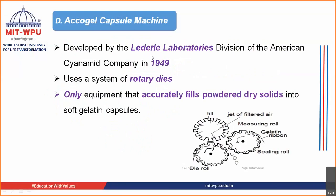The Accogel capsule machine, developed by Lederle Laboratories also around 1949, uses a rotary drive system. It is the only machine used to fill soft gelatin capsules with dry solid powders, whereas both rotary die and reciprocating die methods are used to fill liquids. So there are four methods for formation and filling of soft gelatin capsules: plate process, rotary die process, reciprocating die process, and Accogel capsule machine.